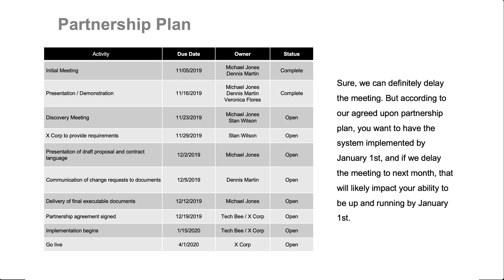For example, let's say you agree to the plan and you check back in trying to schedule a follow-up meeting that's on the plan, and the prospect says 'Can we push that meeting out a month? We're just slammed over here.' Here's a response: 'Sure, we can definitely delay that meeting. But according to our agreed-upon partnership plan, you want to have the system implemented by January 1st. If we delay the meeting to next month, that will likely impact your ability to be up and running by January 1st. So either we need to adjust the plan and change it to maybe February 1st, or we need to not push that meeting off a month — push it out a week or whatever. We need to adjust the plan. Which one do you want to do?' The partnership plan gives you a lot more leverage, accountability, and control while you're trying to move the prospect through your sales process and close them.